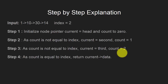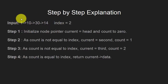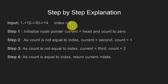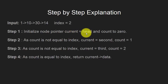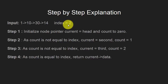Let us now look at the step-by-step explanation of how this algorithm works. Consider a sample linked list with 4 nodes as shown here. This linked list is passed as an argument to the function, along with index 2. As per the algorithm, we will first initialize a pointer to point to the head node and count variable to 0. As count is equal to 0 and index is 2, count is not equal to index. So we will change the current pointer to point to the second node.